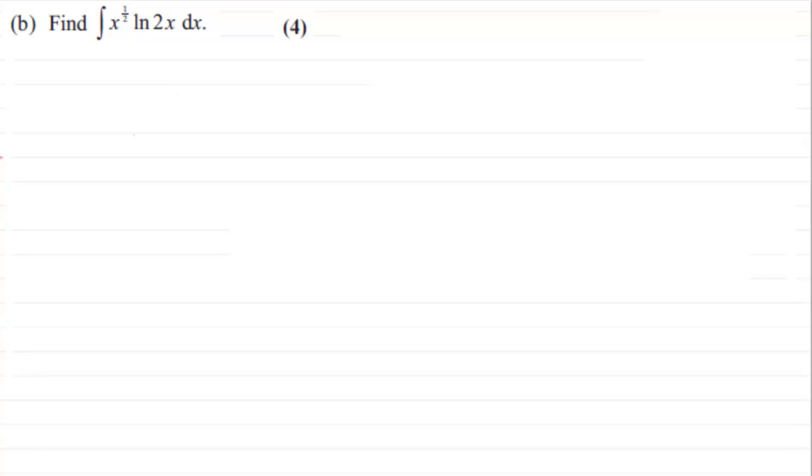So let's see how you got on. Now first of all, what I'd like to do is just copy down this integral we've got: the integral of x to the power half multiplied by the natural log of 2x, and we're integrating this with respect to x.